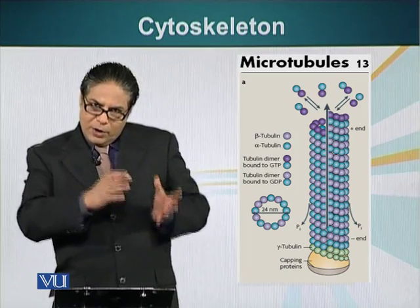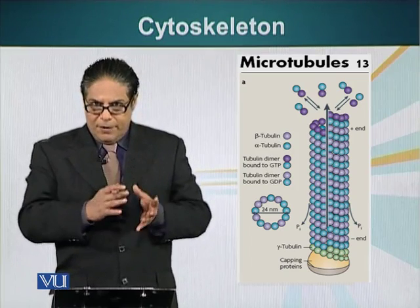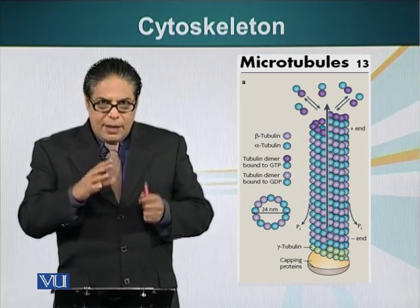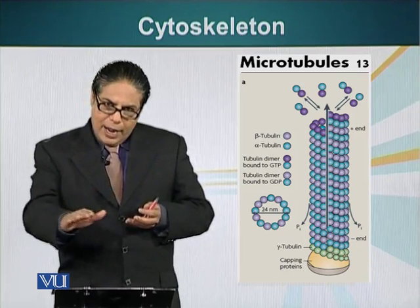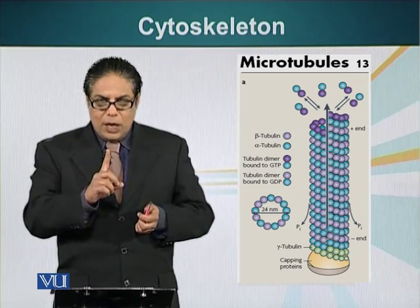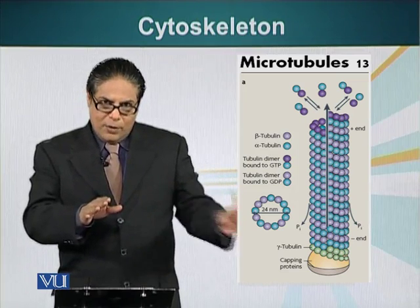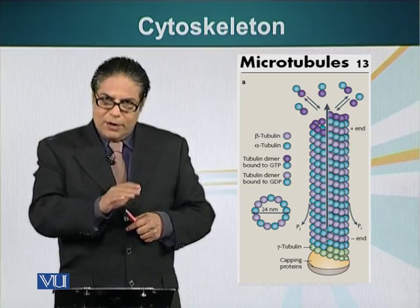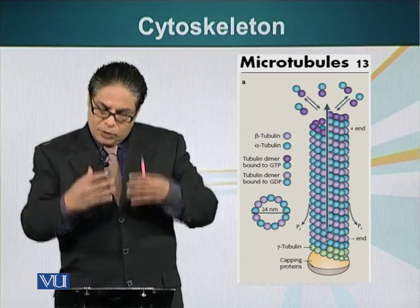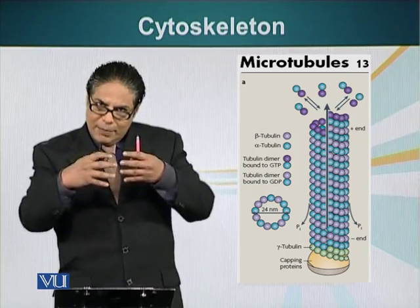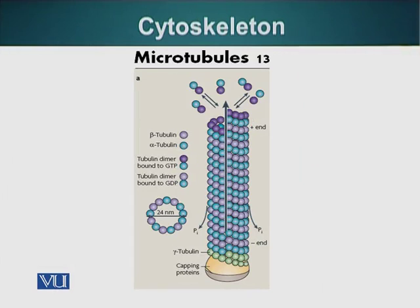The two ends of microtubules are different, and this difference is manifested along the entire length of the microtubule. Imagine closing your eyes and running your hand along the tail of a cat — you can still tell which direction the cat is, whether it is on the right or the left, just by the feel of the surface. Similarly, the surface of these structural elements has differences that can be recognized and read by other molecules. For example, motor proteins know which end of a microtubule is the plus end and which is the minus end.